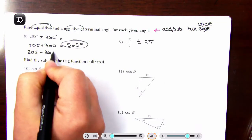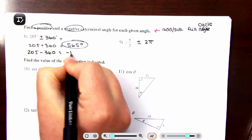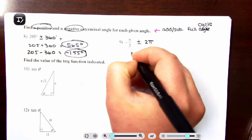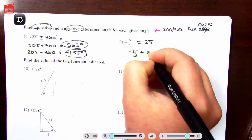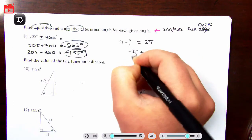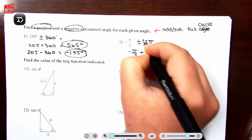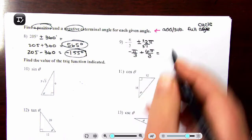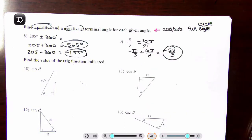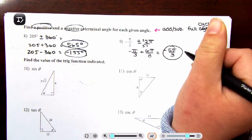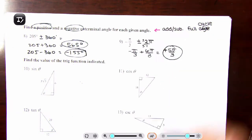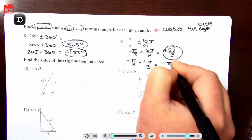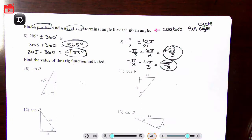For the negative coterminal angle of 205°: 205 minus 360 gives negative 155 degrees. For negative π/3: adding 2π, I convert 2π to 6π/3 to get a common denominator. So negative π/3 + 6π/3 = 5π/3 as the positive coterminal. Subtracting 6π/3 from negative π/3 gives negative 7π/3 as the negative coterminal angle.